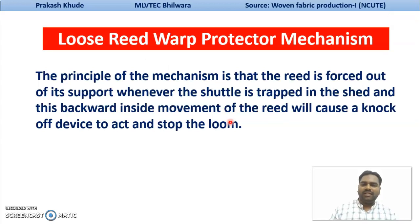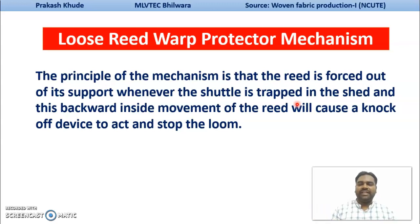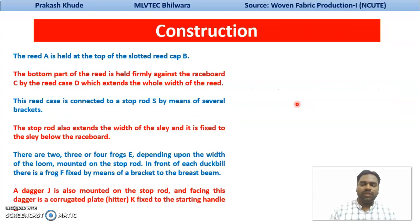The principle of this mechanism is that the reed is forced out of its support whenever the shuttle is trapped in the shed. When the shuttle has been trapped in between the shed, the reed is loosely mounted in between your reed cap and the reed case. When the shuttle has been trapped, the backward movement of this reed takes place, and this will cause knocking off the lever and other mechanisms to knock off the starting handle of your loom and stop the loom.